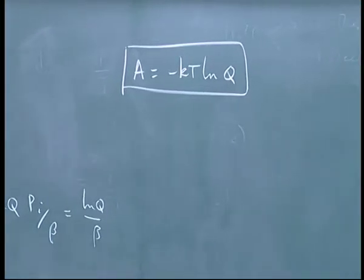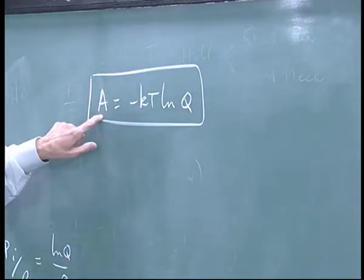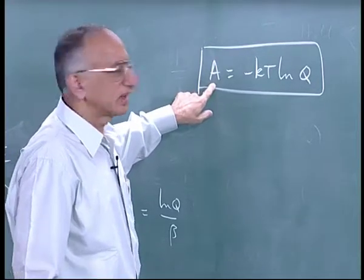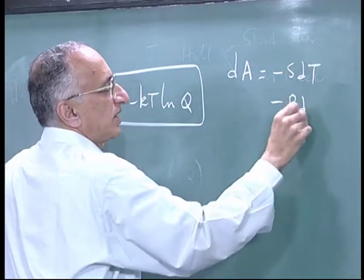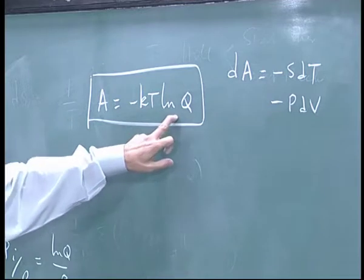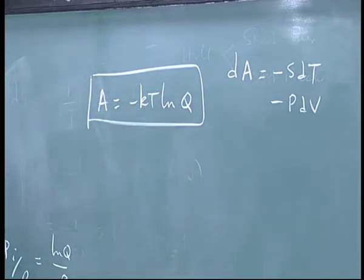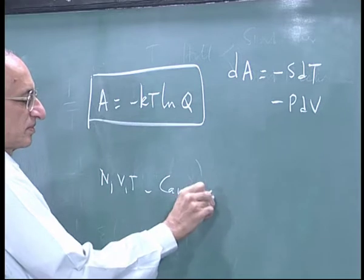So the whole aim of molecular theory is to calculate Q. If you can calculate Q, take its logarithm and you get A. Then you differentiate A with respect to V at constant temperature to get pressure, and with respect to T to get entropy. You use beta as the natural variable in statistical mechanics, so you differentiate with respect to beta rather than T. I started with the NVT canonical system. I could have done the NVE system — an isolated system — which is called the micro-canonical ensemble.